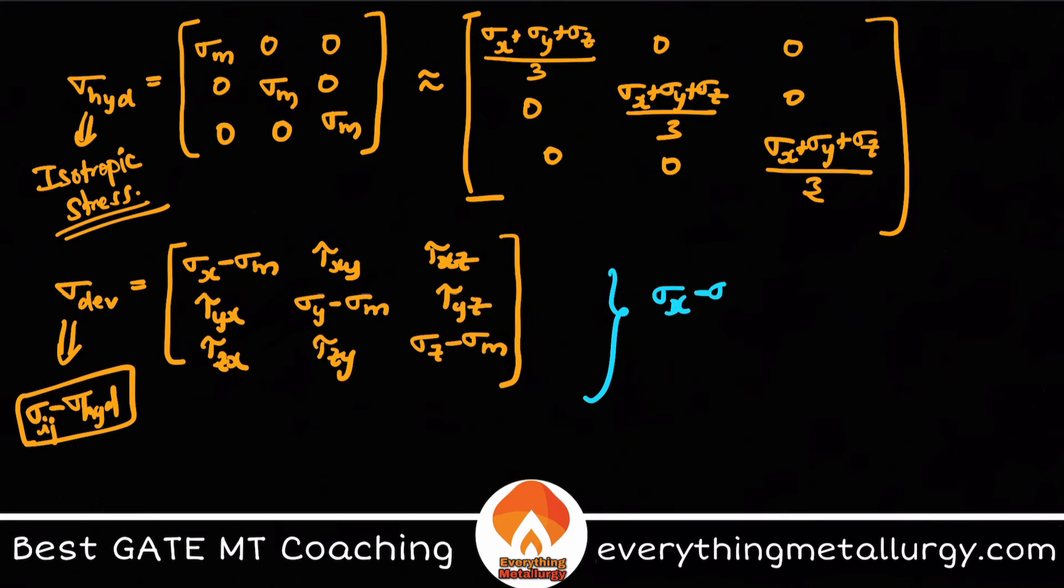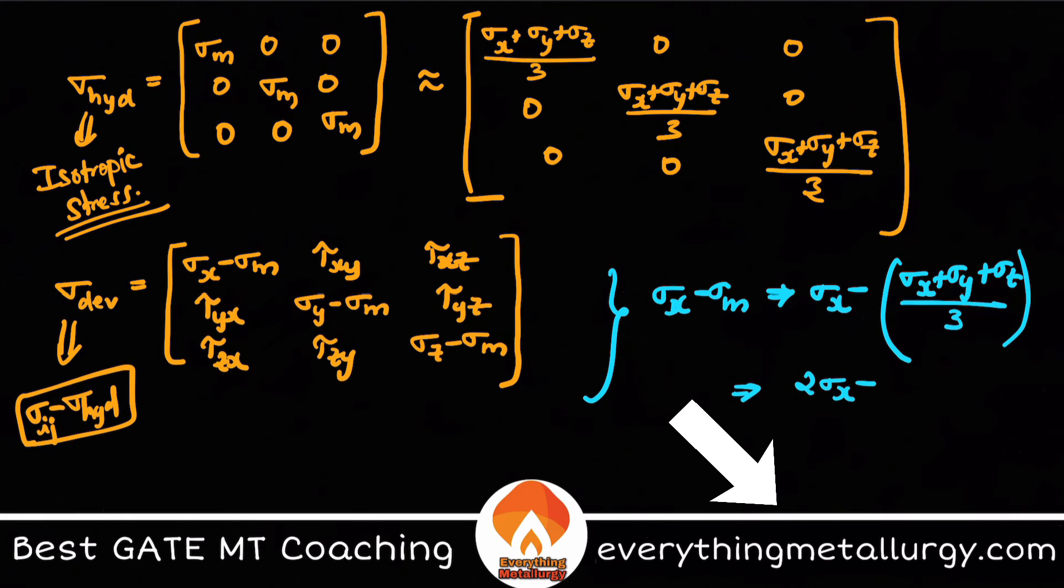This is what you get. If you also want to do this, this equals sigma x minus sigma x plus sigma y plus sigma z divided by 3. From here you get this to be 2 sigma x minus sigma y minus sigma z divided by 3.